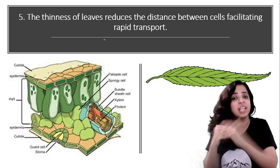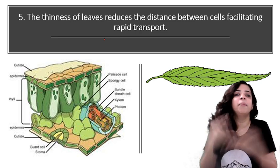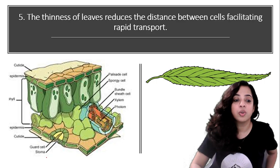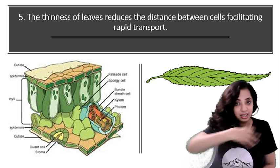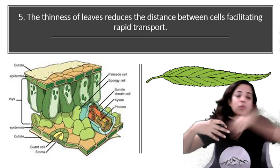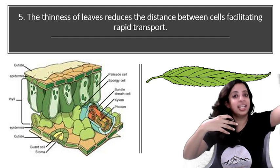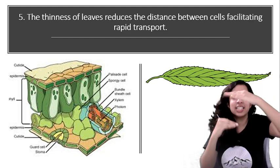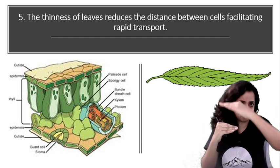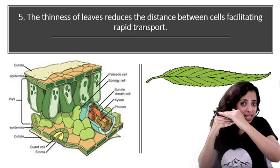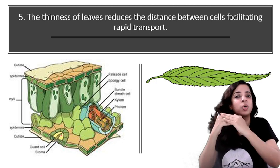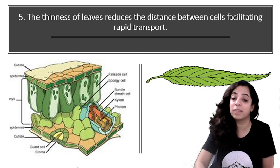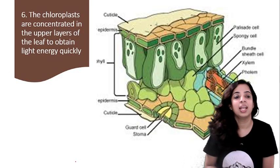So there is rapid transport. From the stomata the gases enter, from the upper epidermis the light is entering. So since the distance between the cells is very less now, there will be rapid transport of these things and photosynthesis will take place very rapidly.